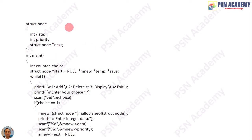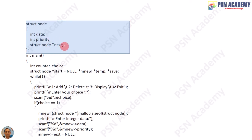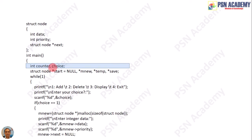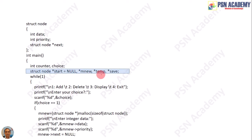Now let us see the coding. This is the struct node, and it has three types of items: the first is data — for simplicity, we have taken int data — the next part is int priority, and the third is a pointer called next which will point to the next node in the list. We have taken a counter variable and a choice variable. The counter will be used during display to show the node number on the screen, and the choice variable will be used to select the addition, deletion, display, and exit options. We have the start pointer set to null, and we will have mnew, temp, and save pointers whose roles we will see later.